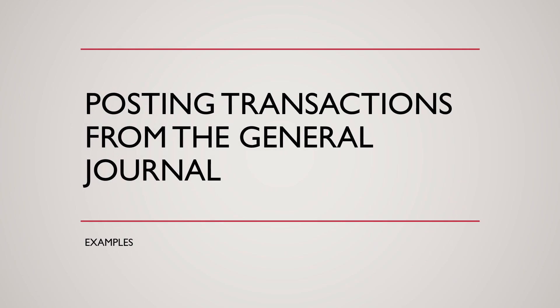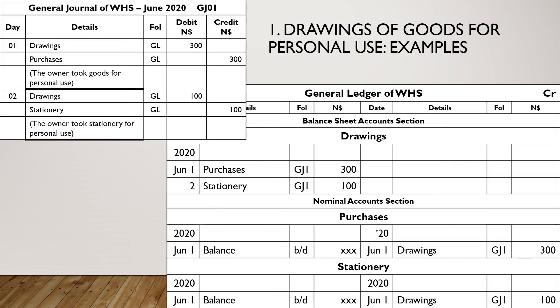We will now look at examples of posting the transactions recorded in the general journal to the ledger accounts. I will use the same examples as in the previous lessons. The great thing about the general journal is that it tells you exactly what you must do — account to debit and account to credit. For the details you just write the contra account. Example: debit Drawings, details Purchases; credit Purchases, details Drawings.